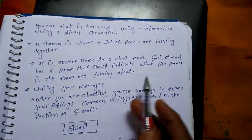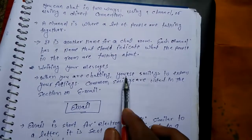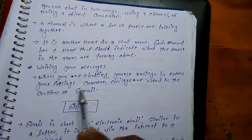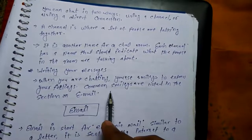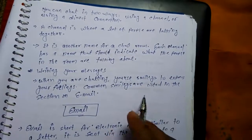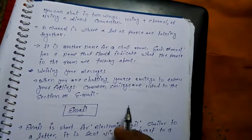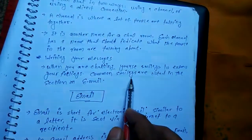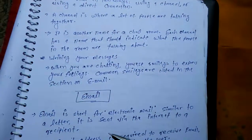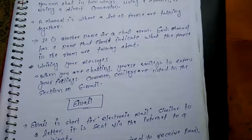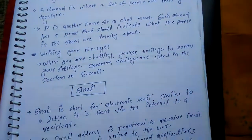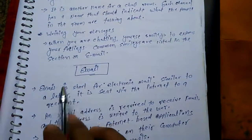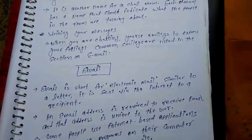Writing your message — उसके लिए आपको message write करना होता है। When you are chatting, you use a smiley to express your feelings. Common smileys are listed in the section or email. किस तरह से chatting करते हैं — वहां पर बहुत सारी facilities provide की जाती हैं, जैसे smiley का इस्तेमाल होता है, emoji। अगर आप smiley देना चाहते हैं, तो उस emoji को click करते हैं, वो automatically दूसरे end पर चला जाएगा। आपनी feeling अगर share करना चाहते हैं, जो भी type की feeling है, सभी का listed होता है।